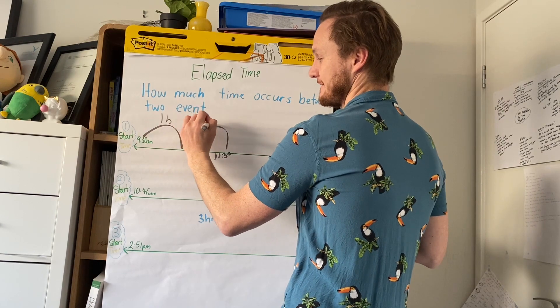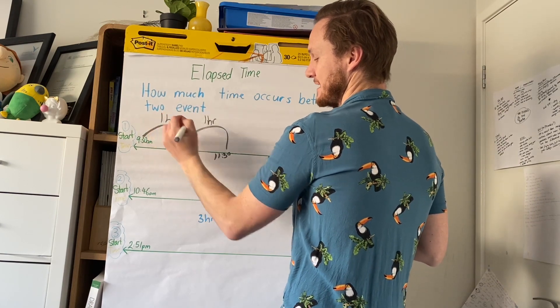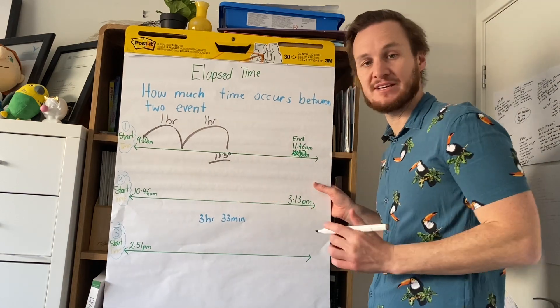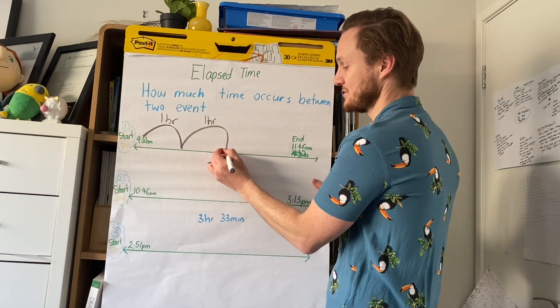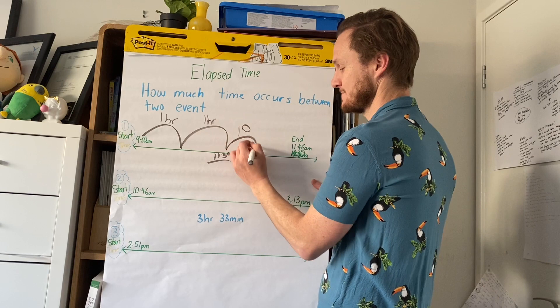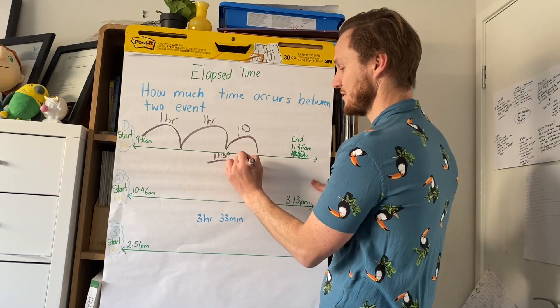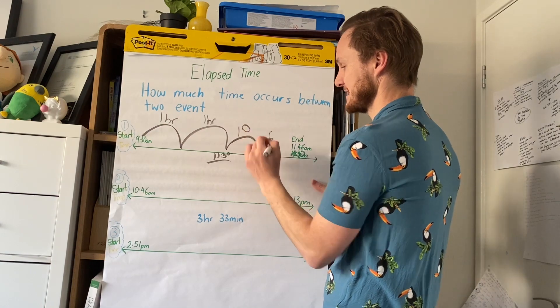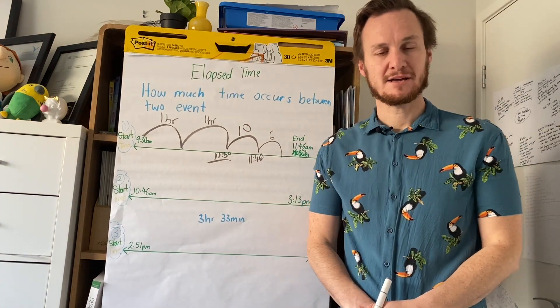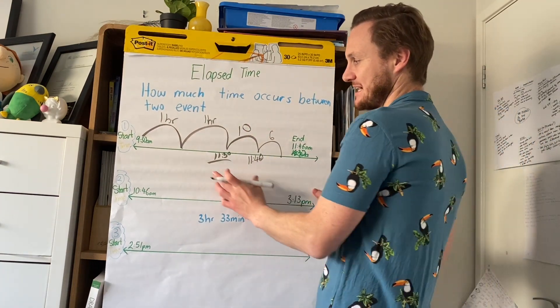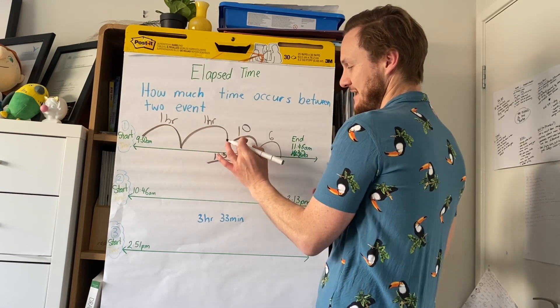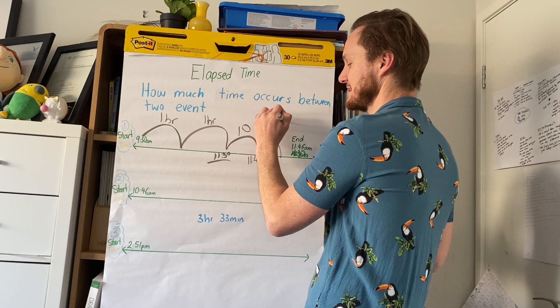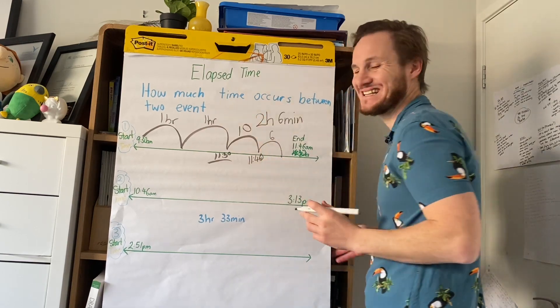And each of those was an hour, right? We're now at 11:30, and now we've got to jump forward to 11:46. So we jump forward 10 minutes, and now we're at 11:40, and we can jump forward 6 minutes. Now you can see here that it's jumped forward two hours and then 10 plus 6. How long did it take between these two things? Two hours and 16 minutes.